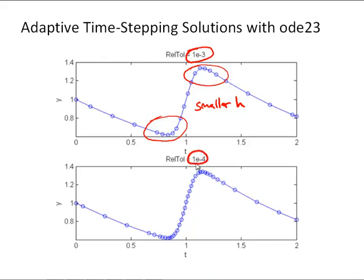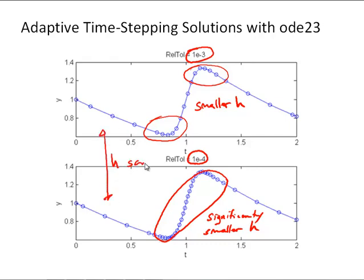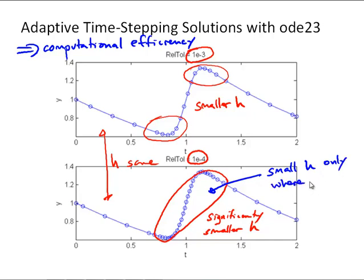So decreasing the tolerance to a tighter value of 1 times 10 to the minus 4, we see significantly smaller h value through that quickly changing region of the solution. But we also see that h is the same in the slower changing region. So this illustrates how that adaptive time stepping gets us more computational efficiency. In other words, we're only using the small h where we need to, like in this region, we use that small h only where necessary for our desired accuracy.